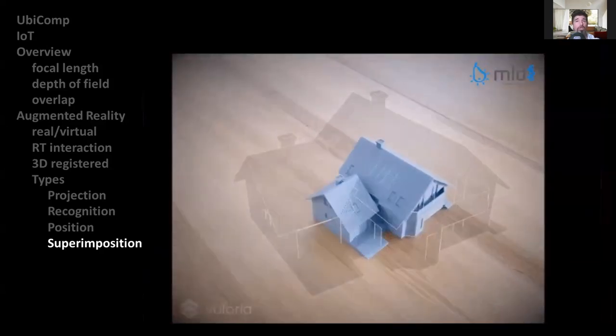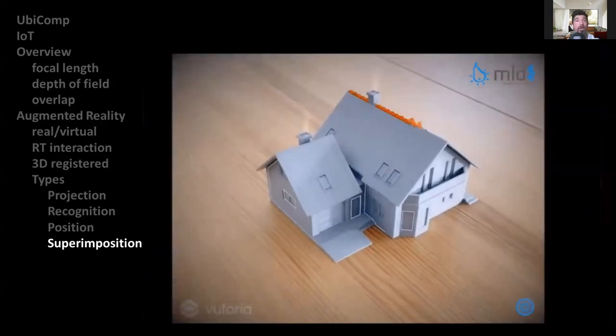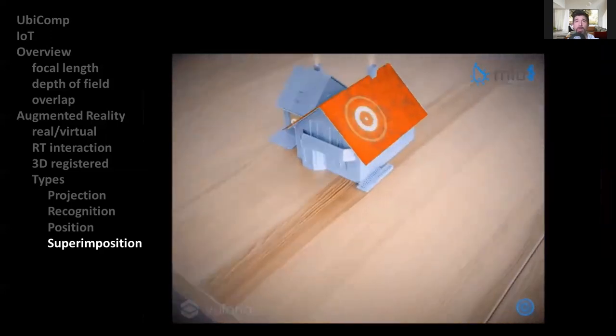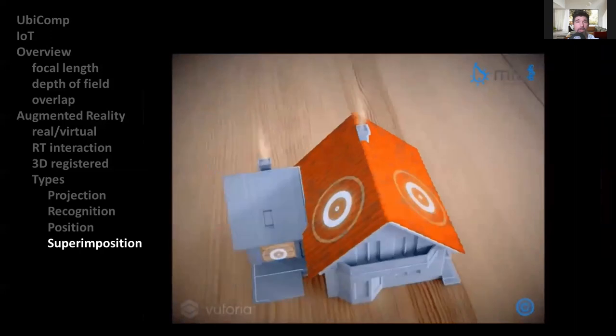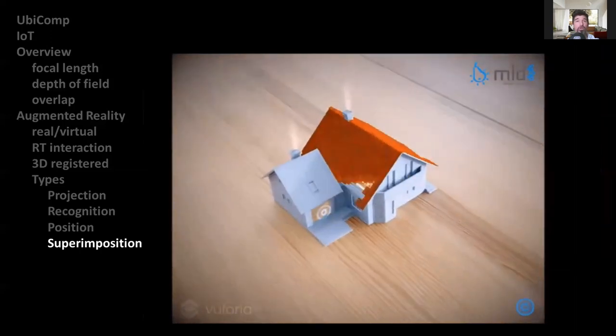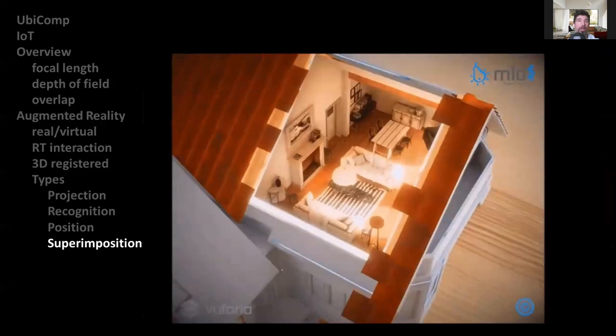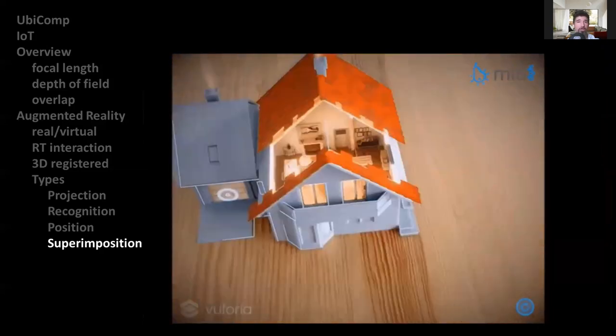However, superimposition AR has found its application in architectural scale models as well, as can be seen here in this example, which first requires object recognition and then the overlapping of virtual images to showcase the interior equipped with see-through window panes and interaction widgets.